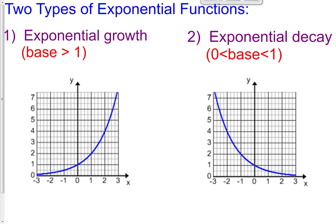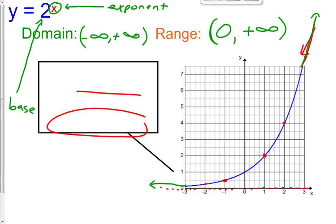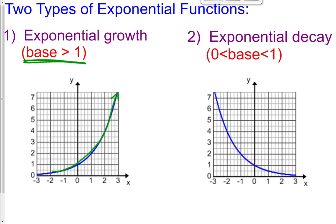Knowing that, we're going to talk about exponential growth and exponential decay. When graphs go up and to the right, we call those exponential growth graphs — the y values get bigger as the x values get bigger. We always have that when our base is bigger than 1, such as this one where our base is 2. So whenever you have a base that's bigger than 1 — like 3, 4, 8, 12, 1.1, 1.2 — all of those will result in exponential growth.